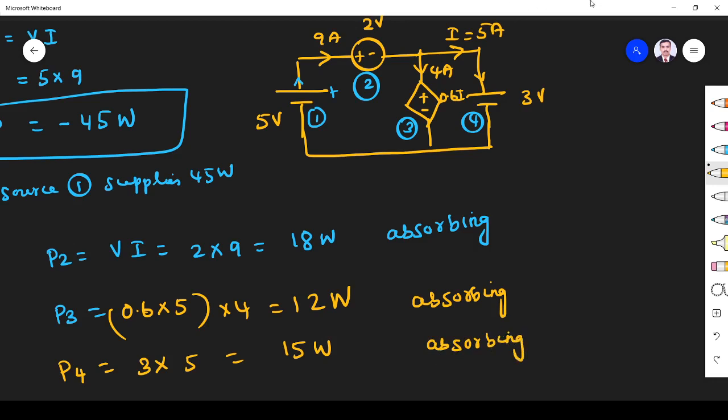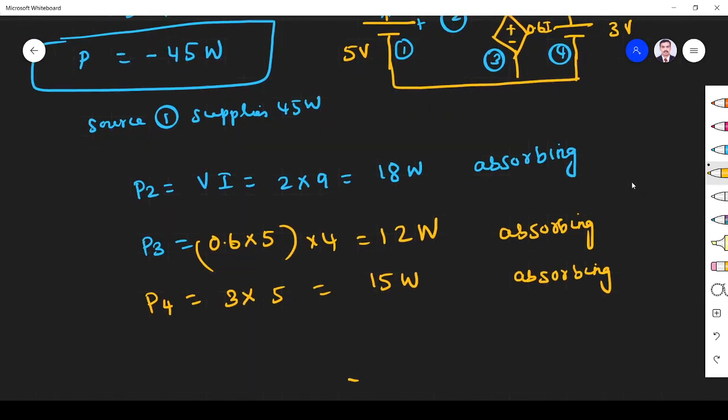Now you can check whether our answer is right or not. You see what is the supplied power. Power supplied is minus 45 watts. Power absorbed, total power absorbed is 18 plus 12, 30 plus 15, 45 watts.